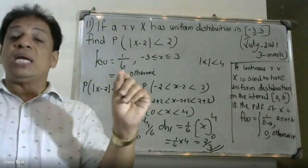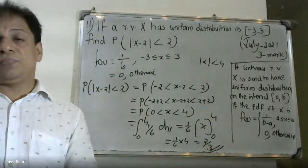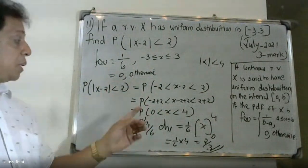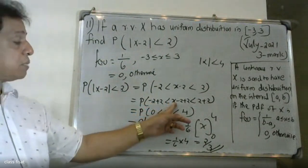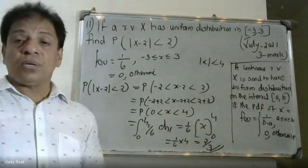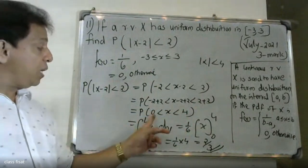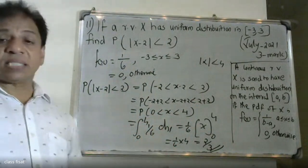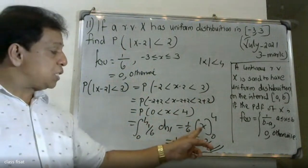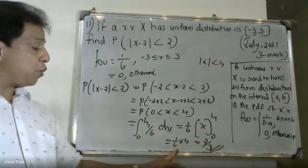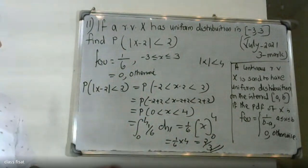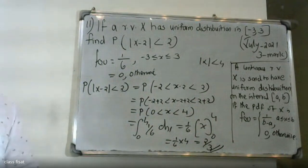Solving |X minus 2| less than 2 again: minus 2 less than X minus 2 less than 2. Adding 2 throughout gives 0 less than X less than 4. Integrating f(x) = 1/6 from 0 to 4 gives 4/6, that is 2/3. So the answer is 2 by 3.